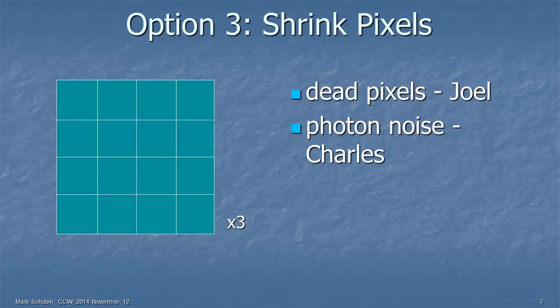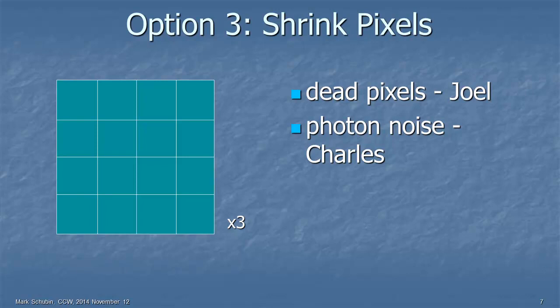So here's another option. Stay two-thirds of an inch and shrink the photosites on the sensor so that you can squeeze in 4K worth of photosites instead of only HD worth of photosites. Now, the problem with shrinking the photosites, one is you get dead pixels, and Joel is going to talk about that. And another is that you have a photon noise issue, and Charles is going to talk about that.